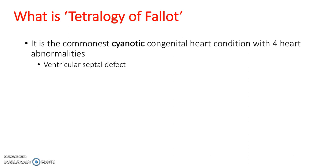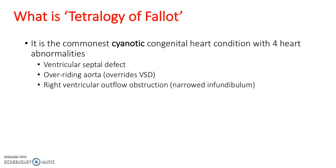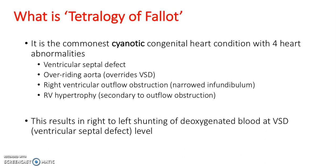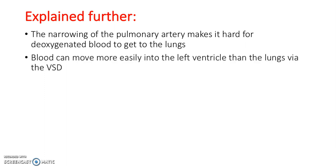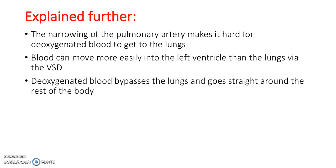There's a ventricular septal defect, an overriding aorta — this overrides the VSD — a right ventricular outflow obstruction, so a narrowed infundibulum, and right ventricular hypertrophy, which is secondary to the outflow obstruction. This results in a right-to-left shunting of deoxygenated blood at the VSD level. The narrowing of the pulmonary artery makes it hard for deoxygenated blood to get to the lungs, so blood moves more easily into the left ventricle via the VSD, and deoxygenated blood bypasses the lungs and goes straight around the rest of the body.